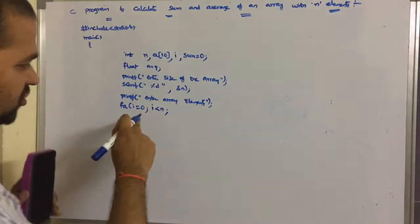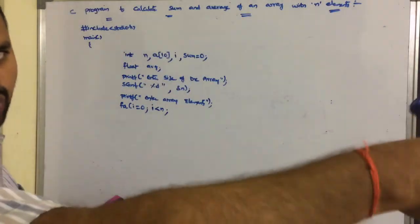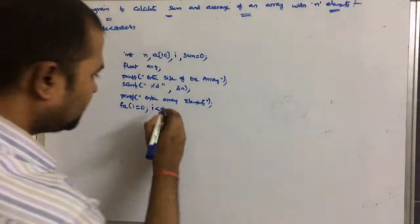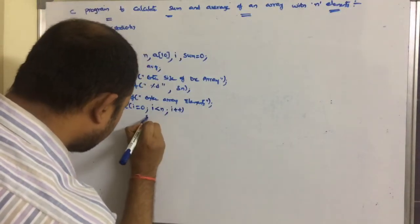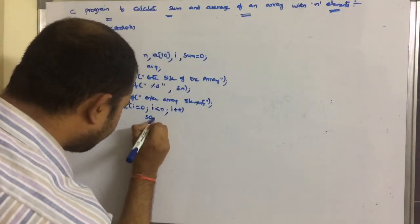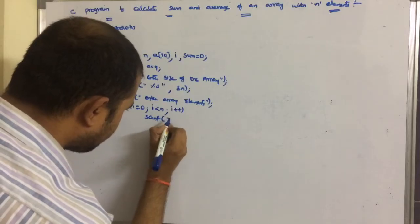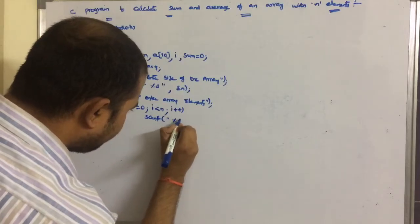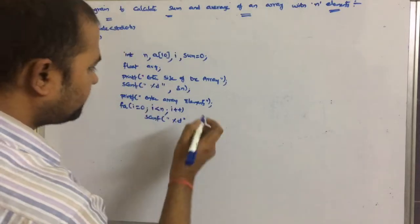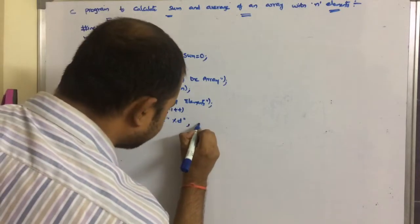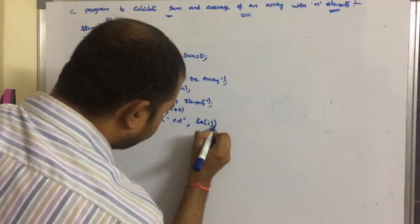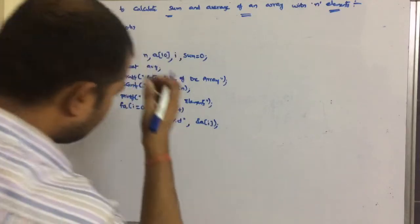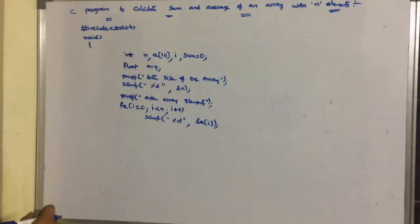Inside the loop, after reading index 0 we move to 1, 2, 3, and so on, incrementing each time. To read each element we use scanf with format specifier %d and &a[i]. This completes reading the array elements.